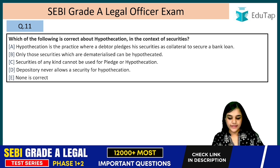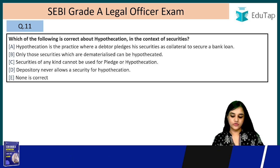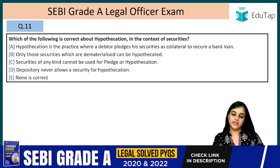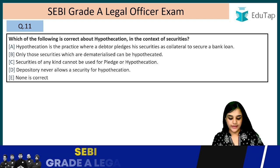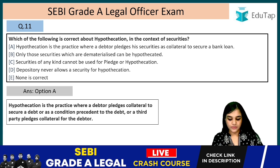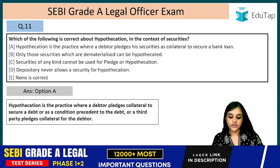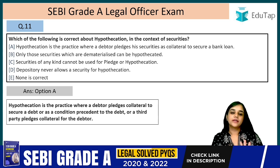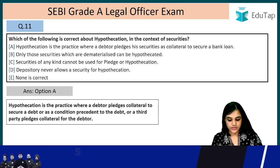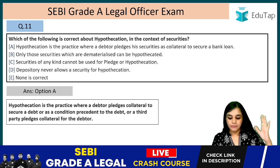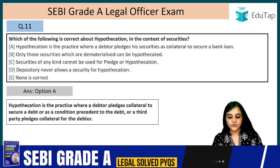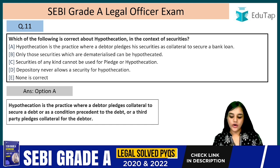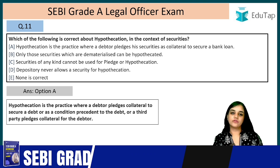Question 11: Which of the following is correct about hypothecation in context of securities? The answer is option A. Hypothecation is the practice where a debtor pledges collateral to secure a debt or as a condition precedent to the debt, or where a third party pledges collateral for the debtor. So the debtor pledges his securities as collateral to secure a bank loan — this is correct.